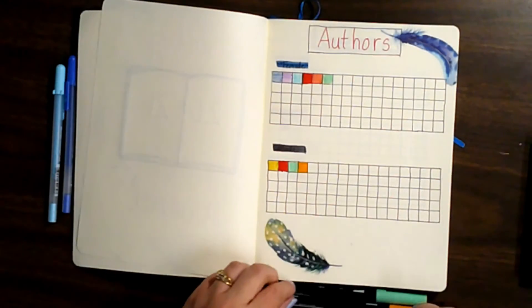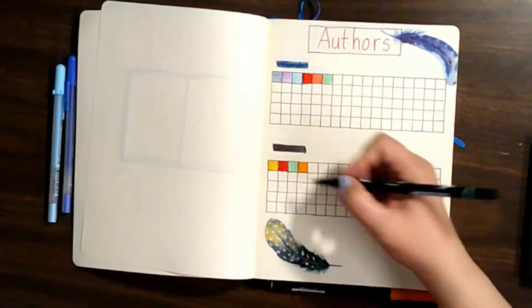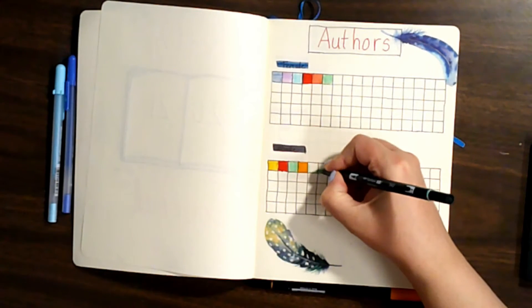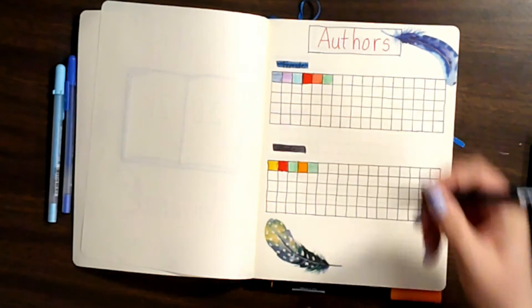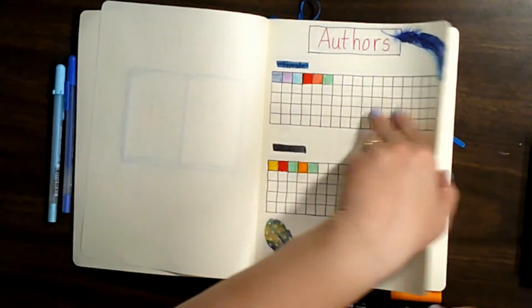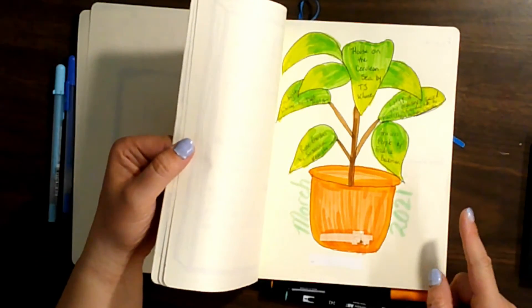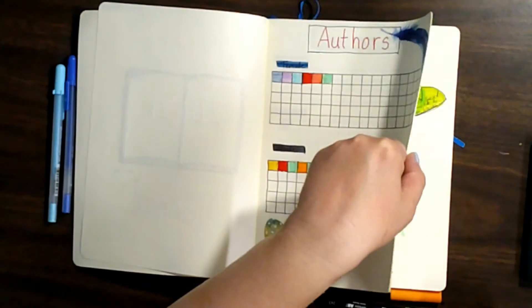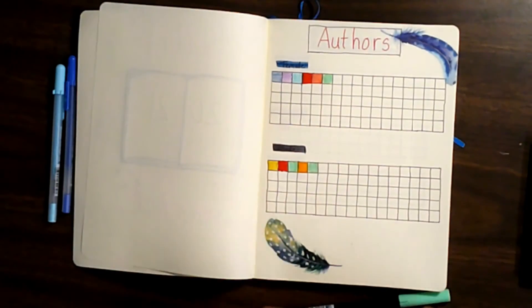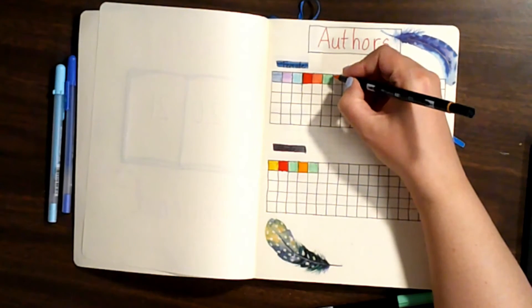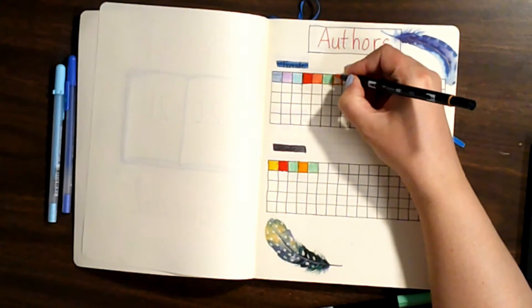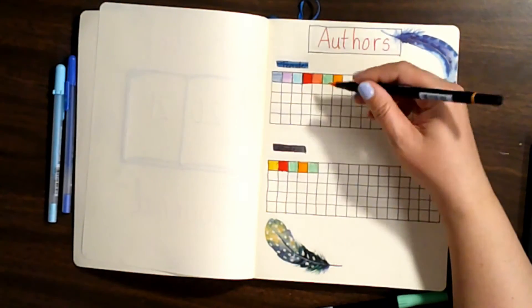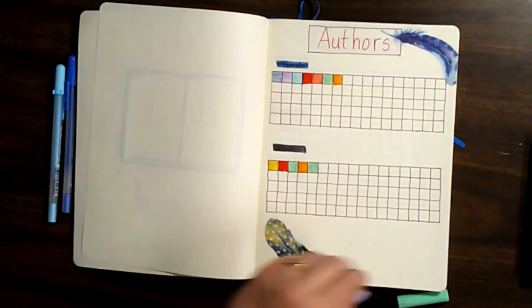House on the Cerulean Sea was also a male author. So we'll do that. Liturgy of the Ordinary was a female author. So we'll do that. That's three, four, five. So that's it for that box.